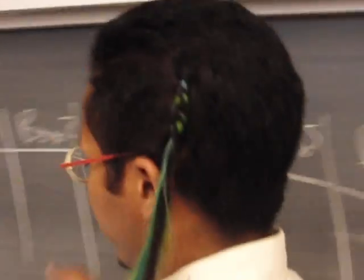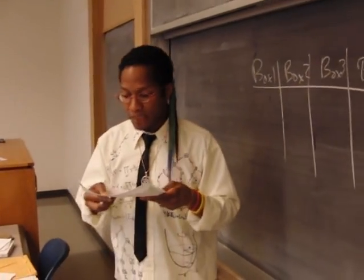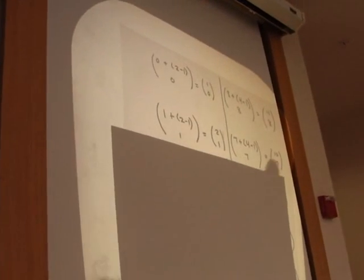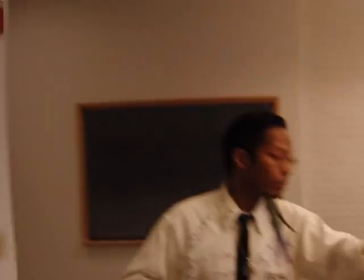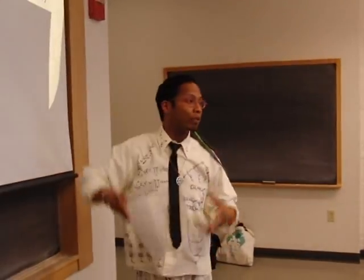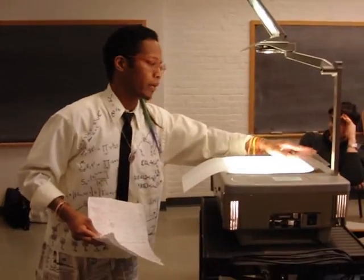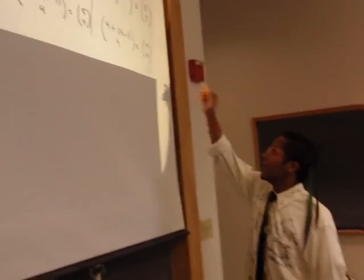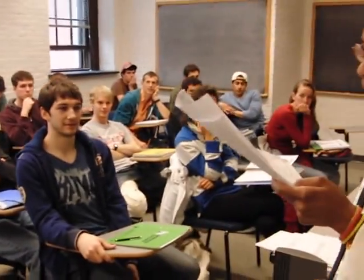If zero balls are in the first two boxes, then there's C(11,8) ways to put the rest in the four remaining boxes. There are C(2,1) ways to put one ball in the first two boxes, and C(10,7) ways to put the remaining seven in the four remaining boxes. There are C(3,2) ways to put two balls in the first two boxes, and C(9,6) ways for the rest. There are C(4,3) ways to put three balls in the first two boxes, and C(8,5) ways for the rest. There are C(5,4) ways to put four balls in the first two boxes. At each step, we add this all up because these cases are disjoint.